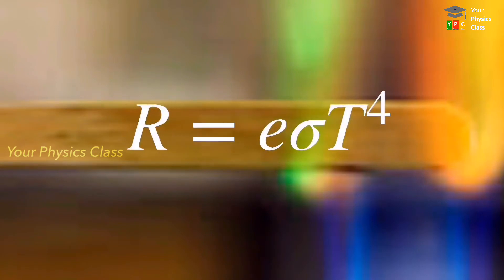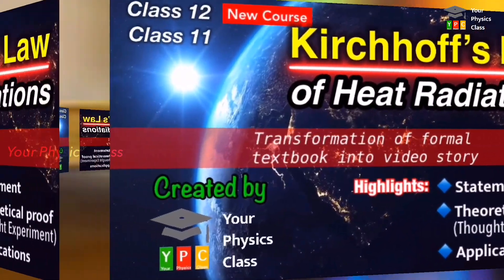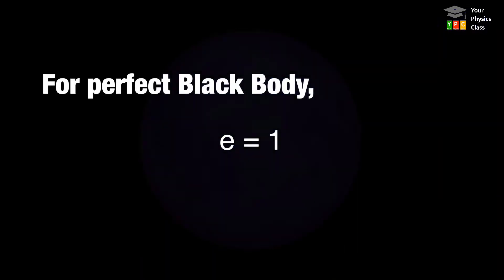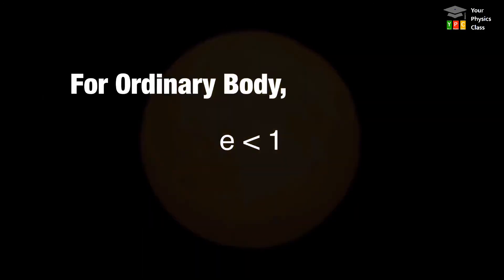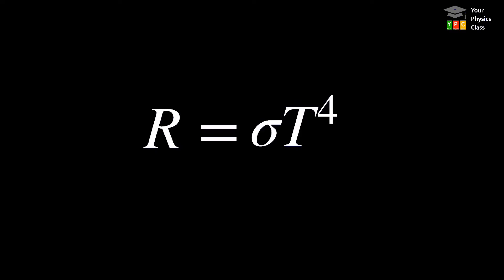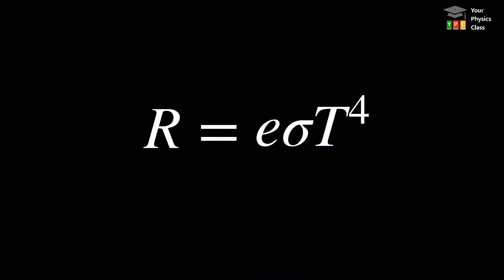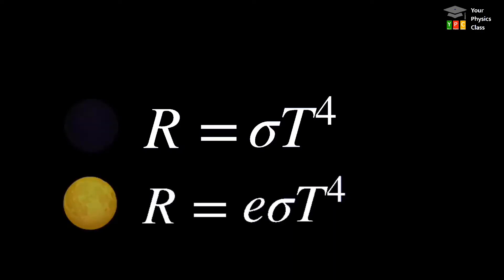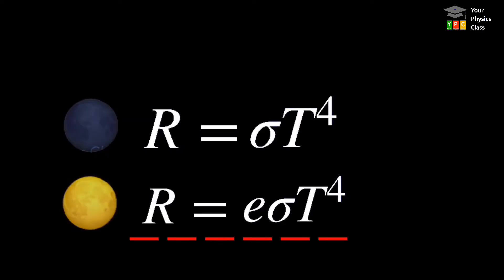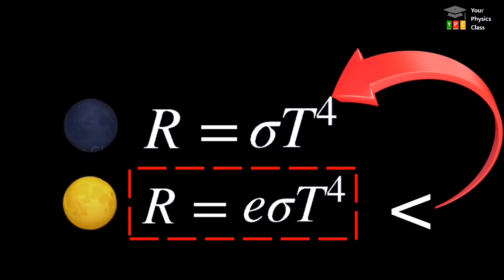For an ordinary body, emissivity is less than 1, hence the radiant power per unit area is R equals e times sigma times T to the power 4. The extra factor e is not seen in the black body case because for a perfectly black body emissivity is always equal to 1. For an ordinary body it is always less than 1, so comparing these two equations, radiant power per unit area of an ordinary body is less than that of a perfectly black body.